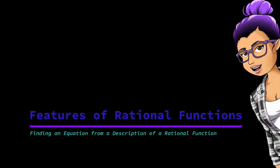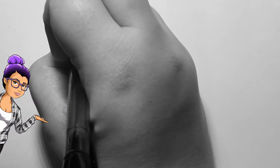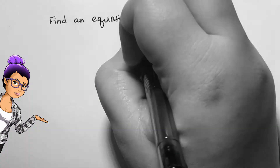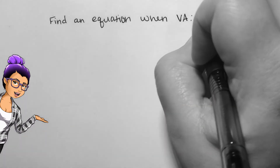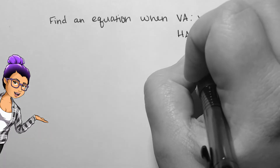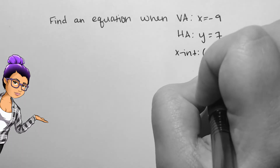Finding an equation from a description of a rational function. Given a few features of a rational function, we should be able to work backwards in finding an equation for it. We want to find a rational function with vertical asymptote x equals negative 9, horizontal asymptote y equals 7, and x-intercept negative 5, 0.